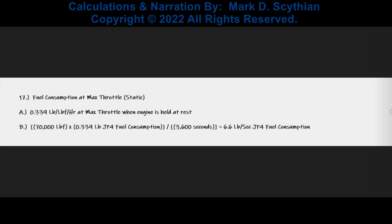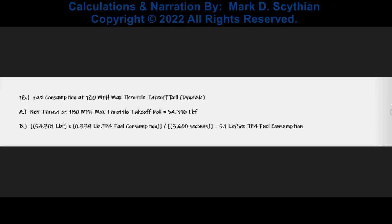Next, we calculate the fuel consumption at max throttle while the engine is held at rest or at static conditions. The thrust specific fuel consumption is 0.339 pounds per pound of thrust per hour. We previously calculated 6.6 pounds per second fuel consumption at static conditions. Fuel consumption at 180 mph runway takeoff roll at V1 rotate is calculated at 5.1 pounds per second JP4 — slightly less than at static conditions.